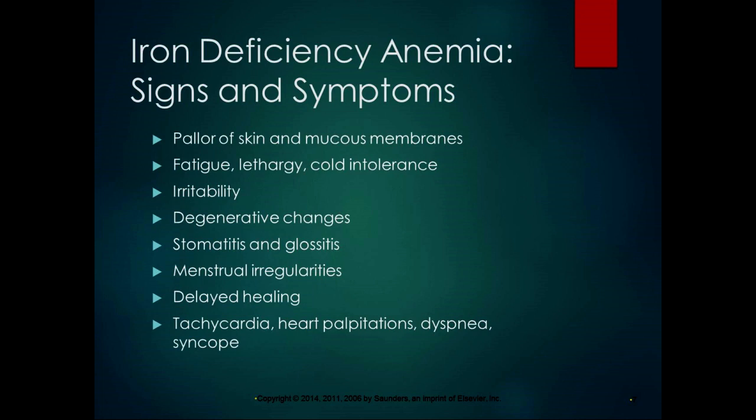Signs and symptoms include pallor of skin and mucous membranes, fatigue, lethargy, and cold intolerance because of peripheral vascular contraction. Irritability, degenerative changes such as brittle hair and spoon-shaped ridged nails — concave on top instead of convex — stomatitis and glossitis, which is inflammation of the oral mucosa and tongue, menstrual irregularities, and delayed healing because oxygen is needed for cellular metabolism. As anemia becomes more severe: tachycardia, heart palpitations, dyspnea, and syncope.